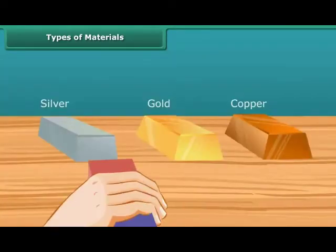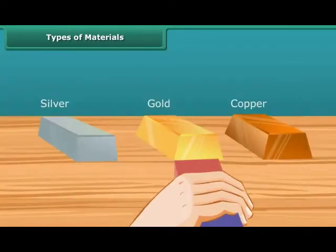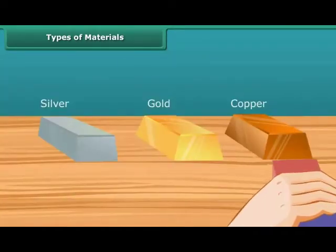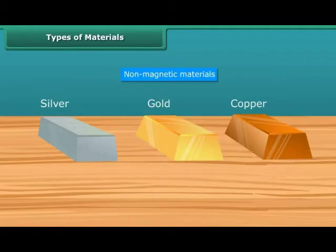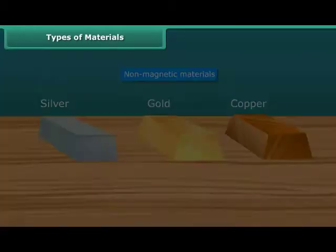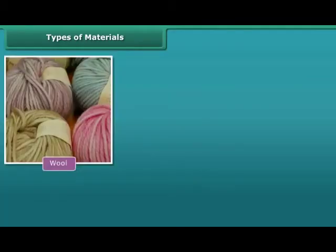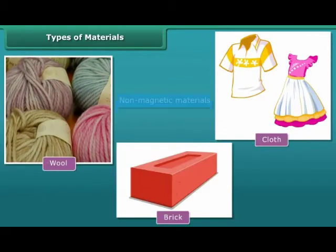Materials that are not attracted by magnets are called non-magnetic materials. For example, wool, cloth, and bricks are non-magnetic materials.